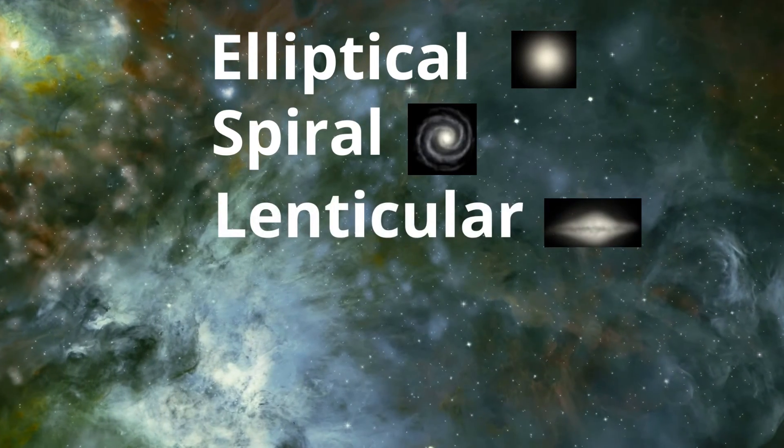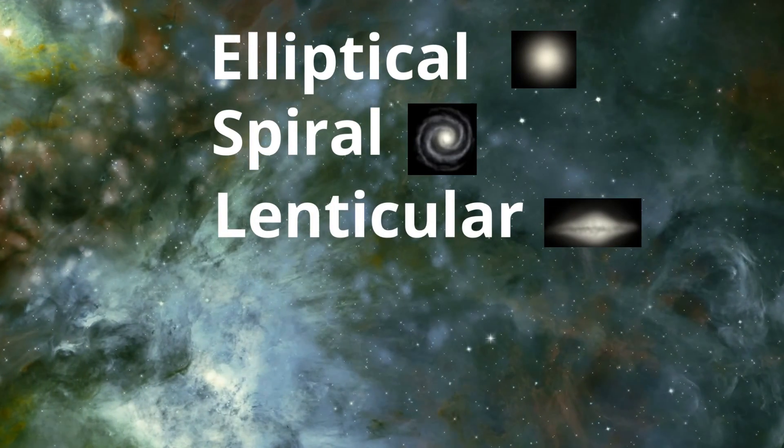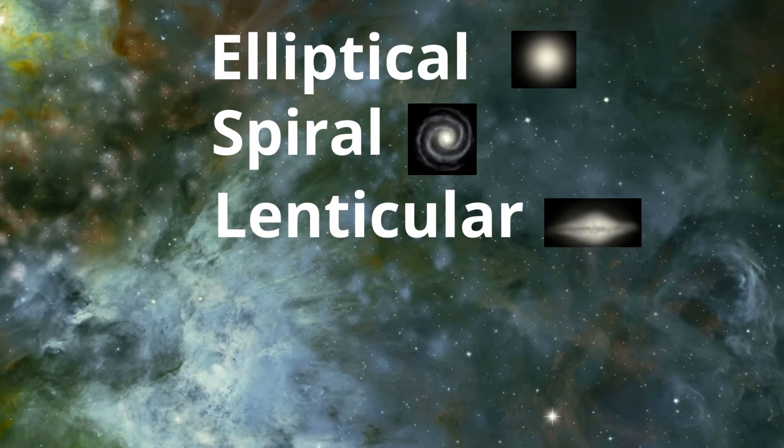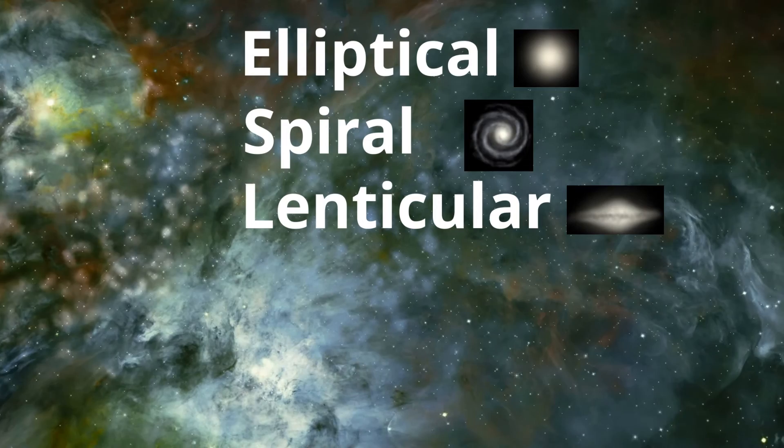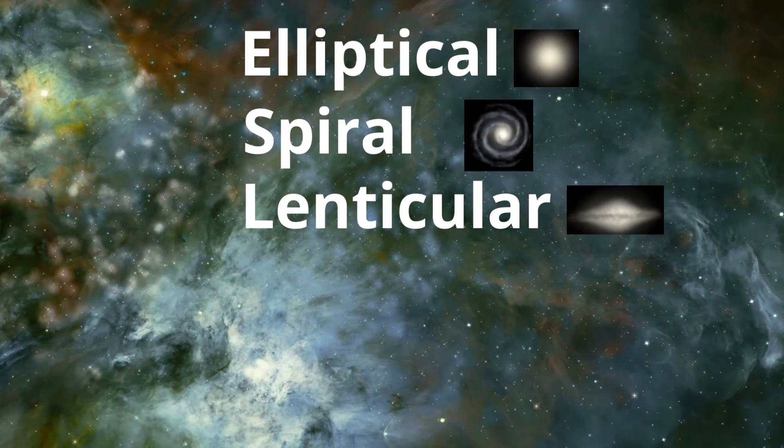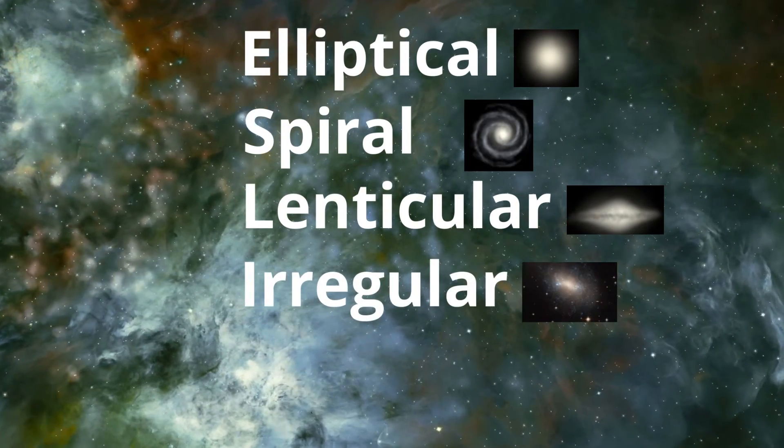Lenticular galaxies consist of a bright central bulge, are similar in appearance to an elliptical galaxy, and are surrounded by an extended disk-like structure. Irregular galaxies are just any other galaxies.